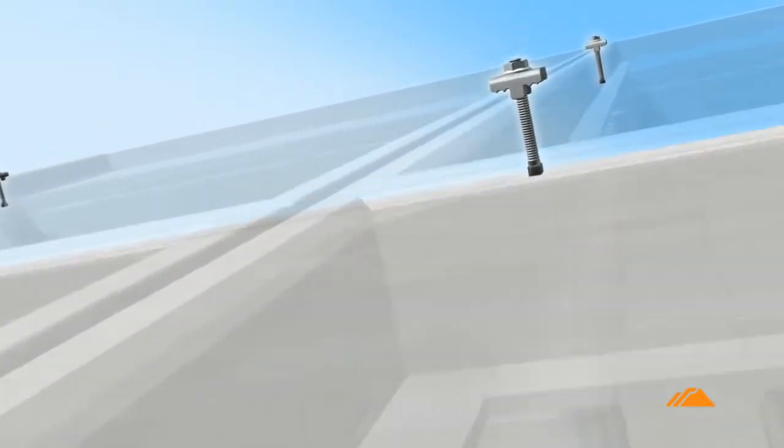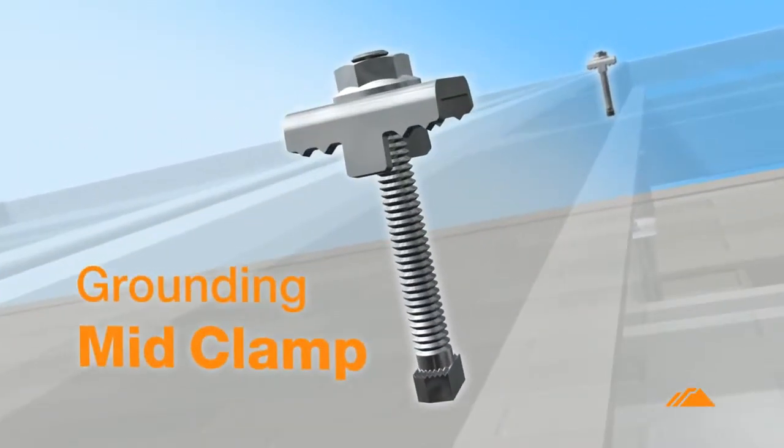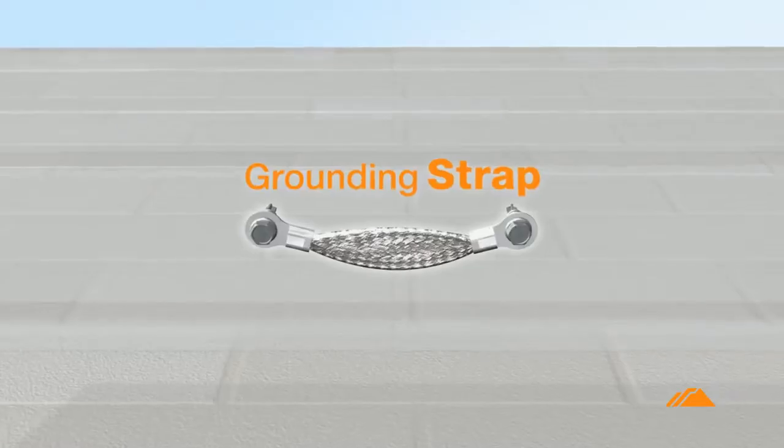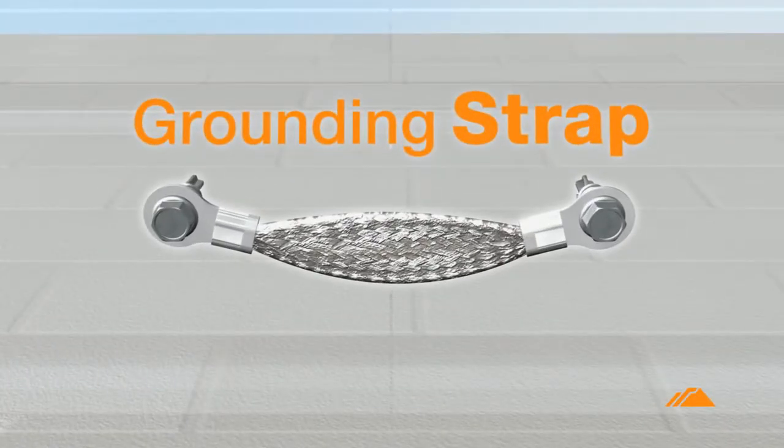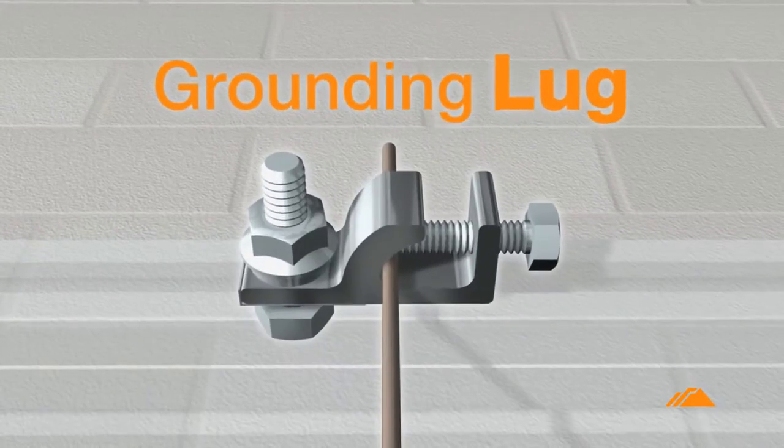The system is made up of three primary components: the grounding mid-clamp, the grounding strap, and the grounding lug.